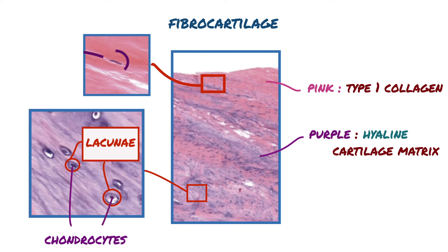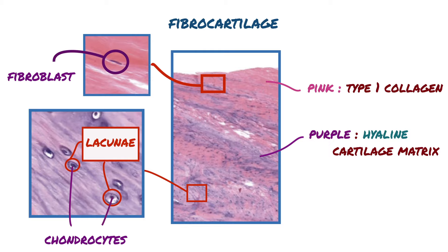Fibrocartilage also has scattered fibroblasts that are typical within the fibrous regions of the tissue. These cells can be identified by their long and thin nuclei, such as the ones seen in this image.